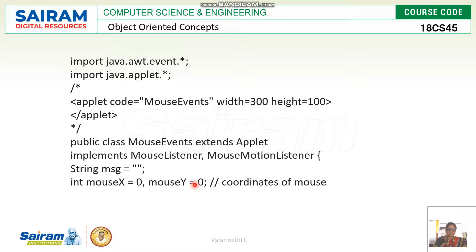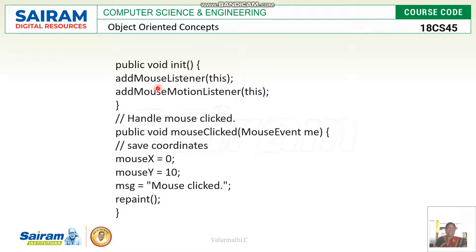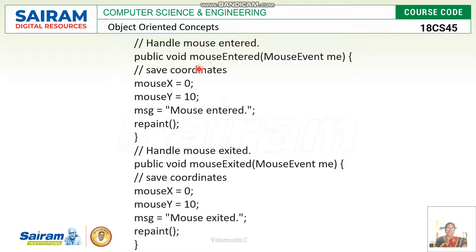We declare an empty message string and initialize x and y coordinates to zero as the initial condition. In the init method of the applet, we add the MouseListener and MouseMotionListener to the applet container using the 'this' keyword. Then we handle events one by one — when the mouse is clicked, a message 'mouse clicked' is sent with the corresponding x and y values, and repaint is called.